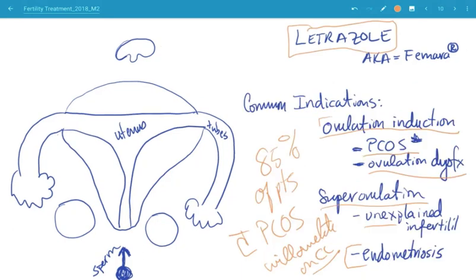Common indications are ovulation induction, PCOS, and ovulation dysfunction. It should be reminded that 85% of patients with PCOS will ovulate on clomiphene citrate. In studies looking at letrozole, it can be as high as 90%. Historically, clomiphene has been the first-line treatment for ovulation induction in patients with PCOS, and letrozole has been a second-line treatment. That has shifted over the last four years. Letrozole can also be used for superovulation, specifically in cases of unexplained infertility and endometriosis. In those particular cases, clomiphene is still the first-line treatment. But if patients don't tolerate it, then letrozole is not unreasonable.